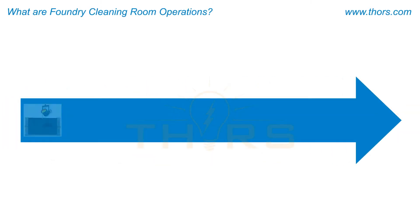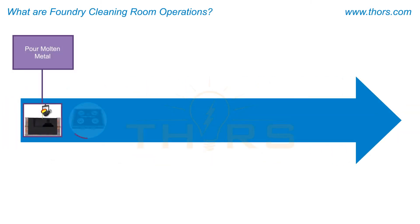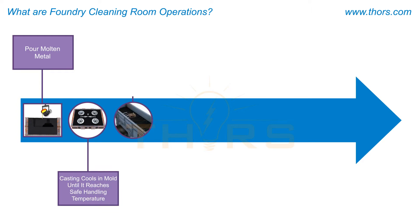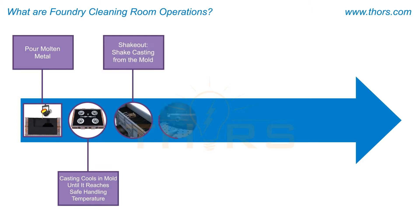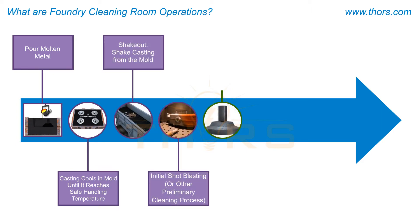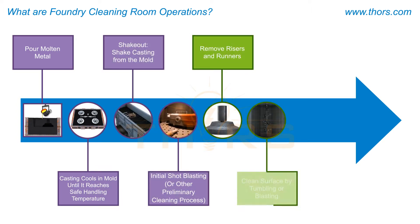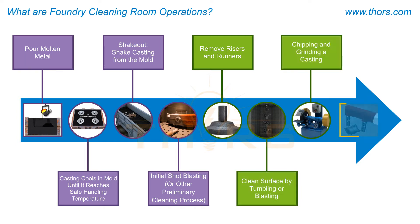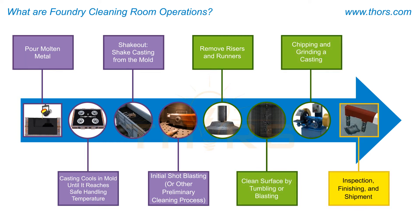Parts reach a foundry's cleaning room for processing after a series of complex production steps. The manufacturing process can be broken down into multiple stages, assuming production uses one of the bonded sand processes.